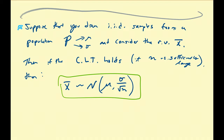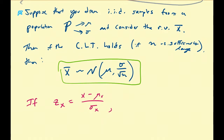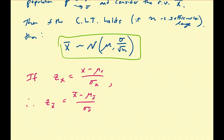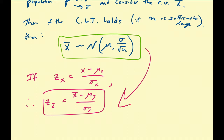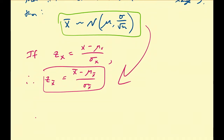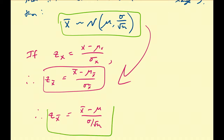So if this is the case, what consequences do we get? If the z-score for x is x minus mu_x divided by sigma_x, then the z-score for x-bar is x-bar minus mu_x-bar divided by sigma_x-bar. According to the central limit theorem, mu_x-bar equals mu and sigma_x-bar equals sigma divided by the square root of n. This is the standard notation for the z-score for a particular sample mean, which can also be written as z equals the square root of n times (x-bar minus mu) divided by sigma.